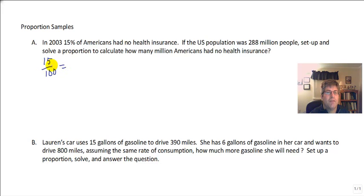So 15% have no health insurance. So we have no health insurance over the total number of Americans, so 15 out of 100 have zero health insurance, equals how many have no health insurance out of 288 million. So 15 out of 100, how many out of our total equals how many out of our total. So that sounds like a well set out proportion.